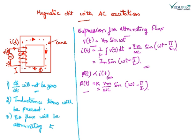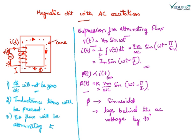Thus the core flux is sinusoidal and lags behind the AC voltage by 90 degrees.